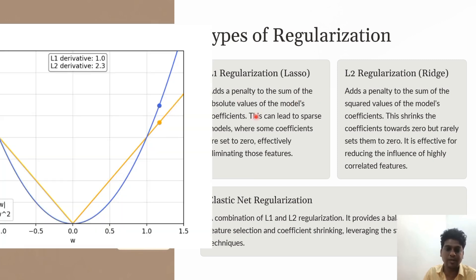In L1, we add a penalty to the sum of absolute values, which can lead to sparse models with some coefficients set to zero.